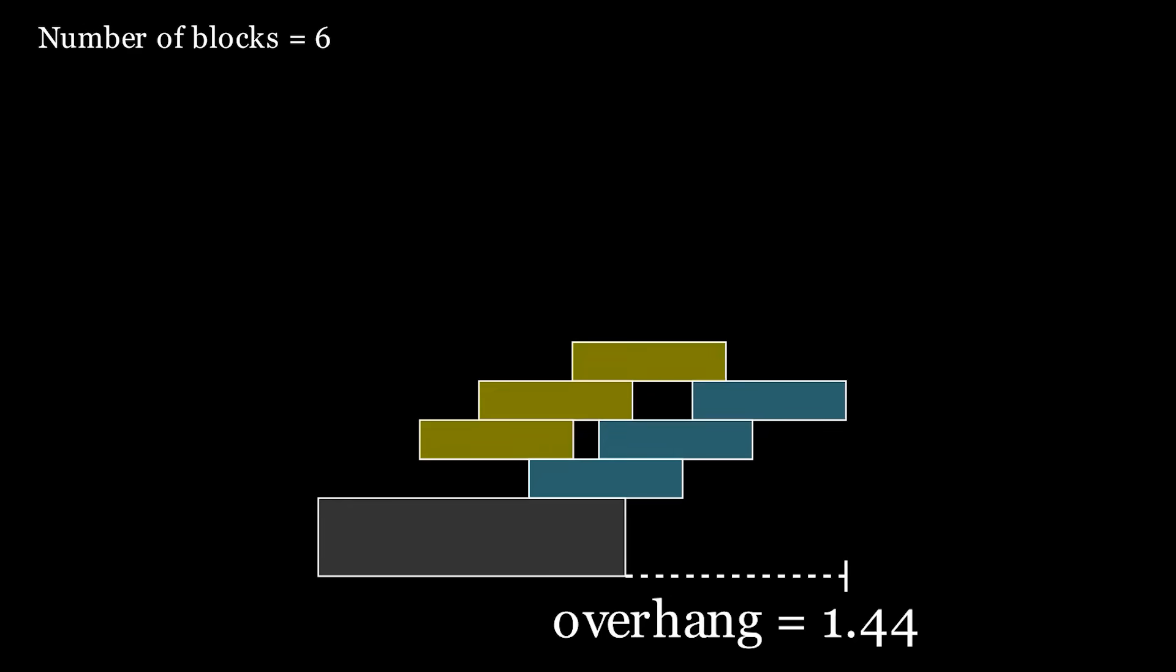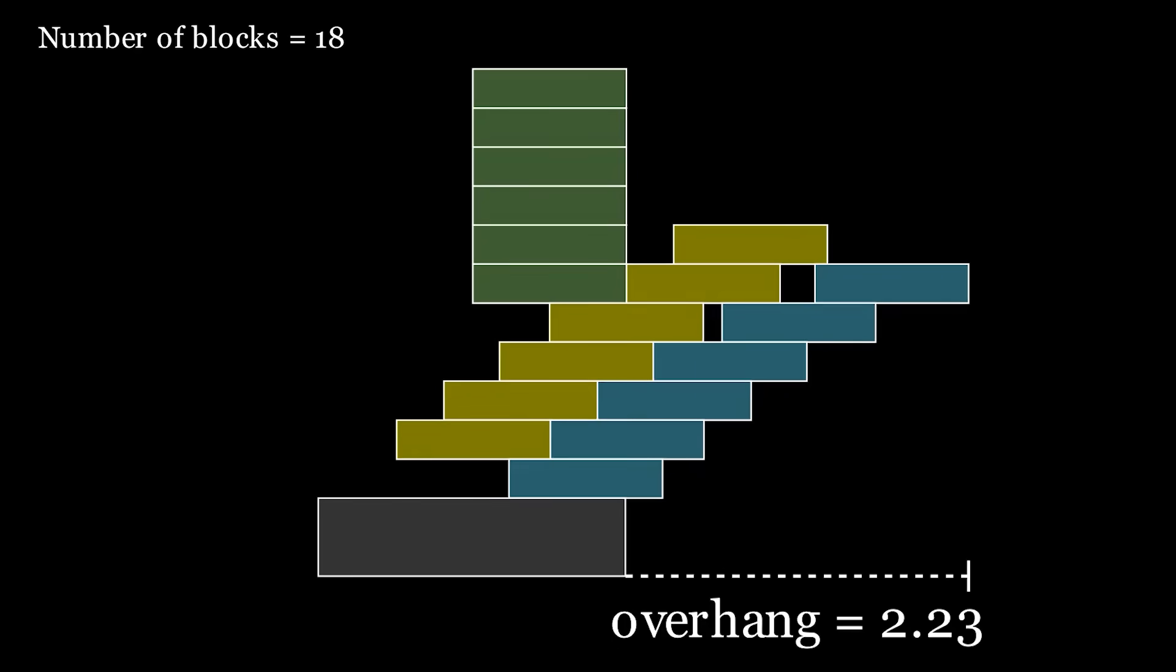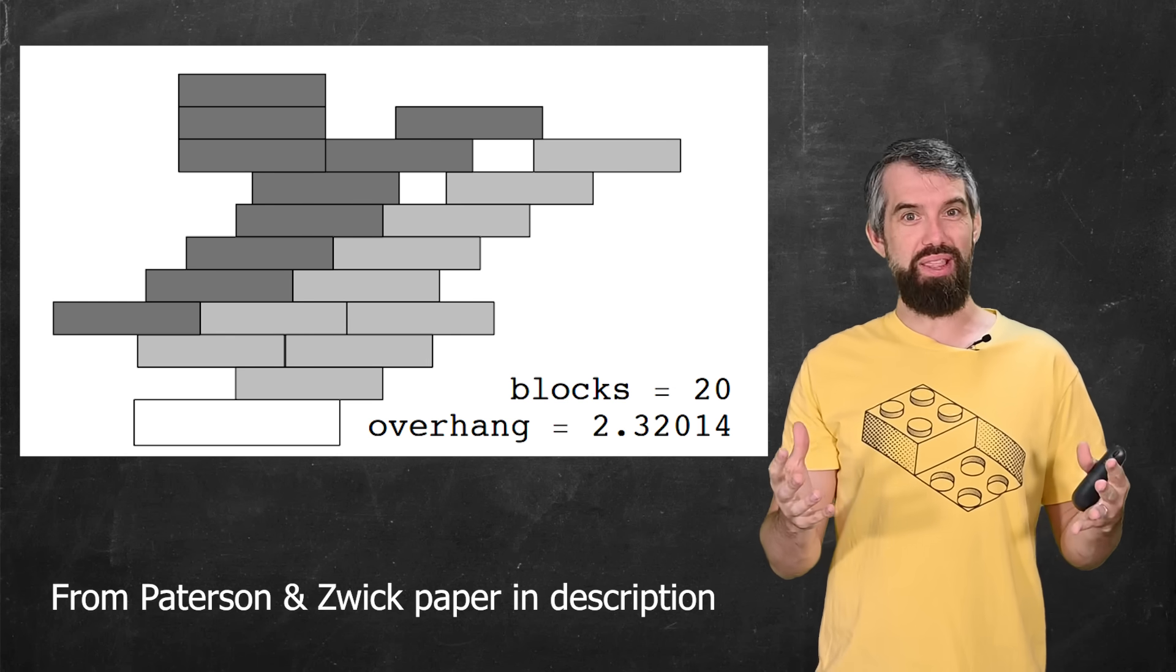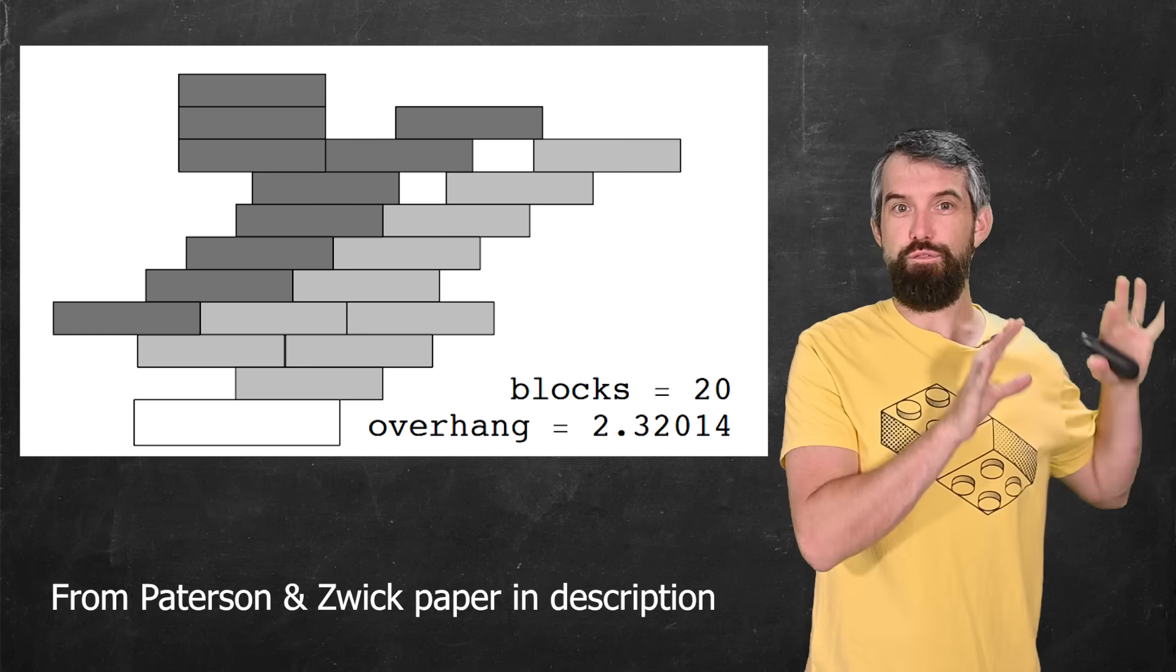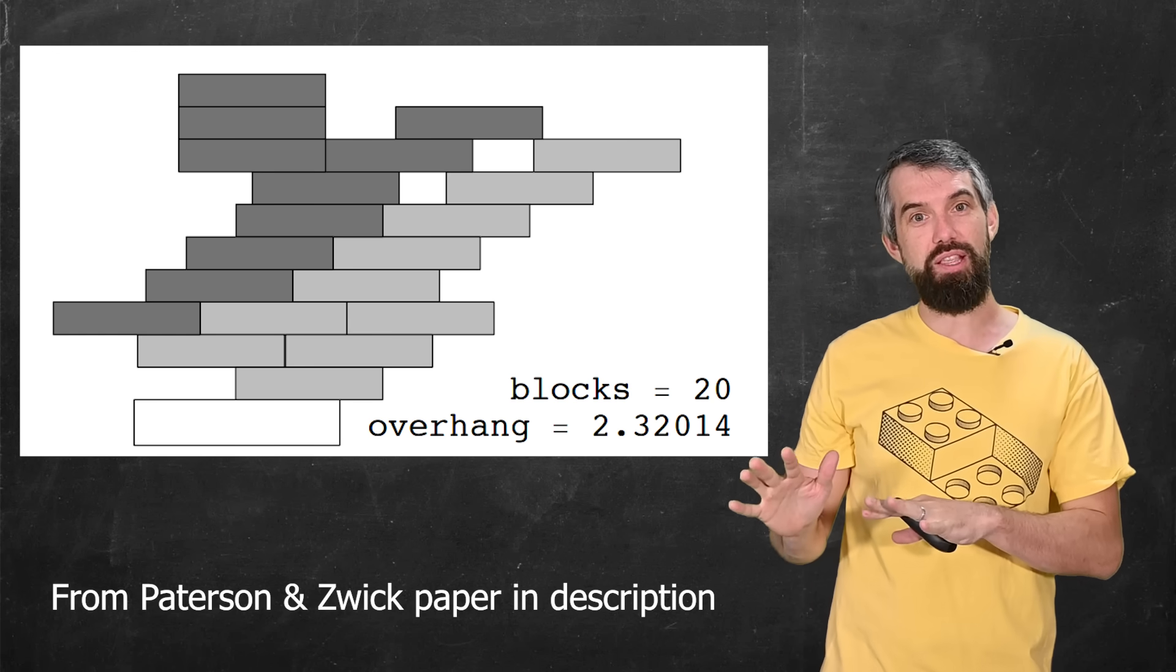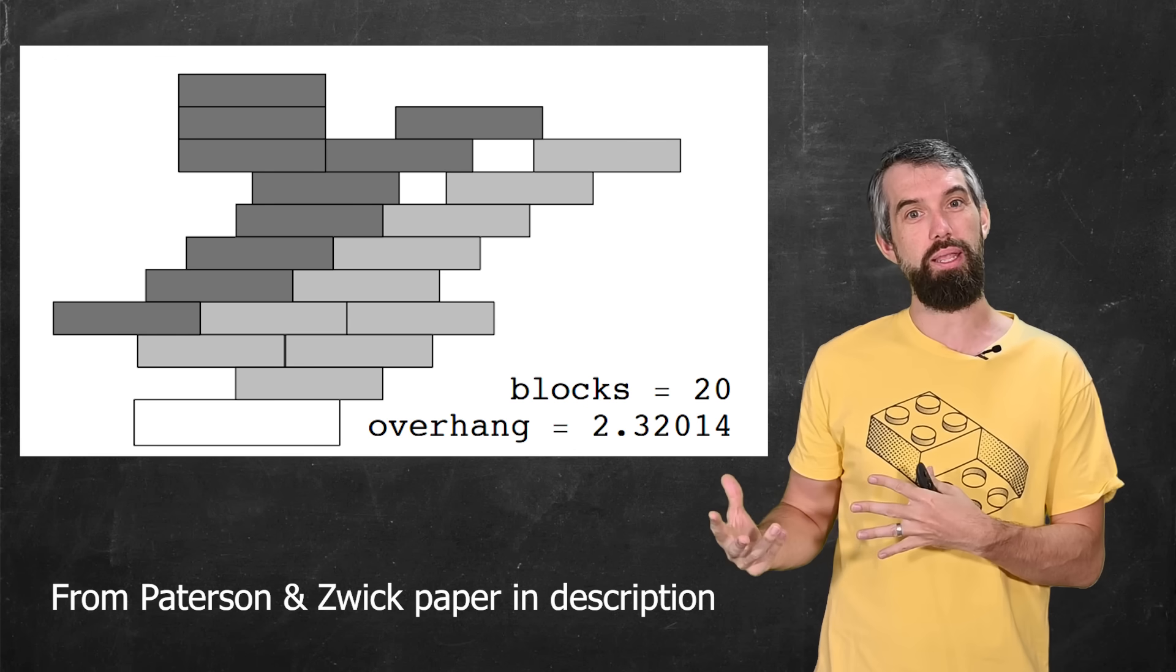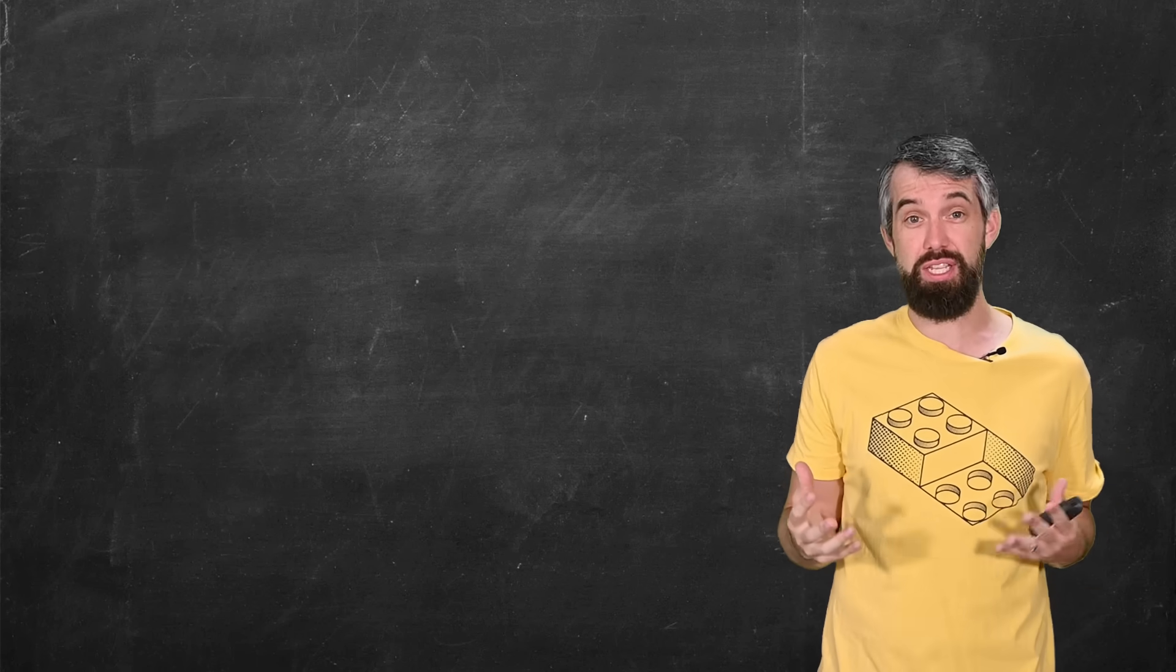However, after 19 blocks in your towers, the optimal solution turns out to stop being spinal. I'll show you this image from the Patterson and Zwick paper showing the result for n equal to 20. But note that there's not formulas that derive this. This was discovered after exhaustive numerical calculations only. And so I want to change up the question that we're asking now.